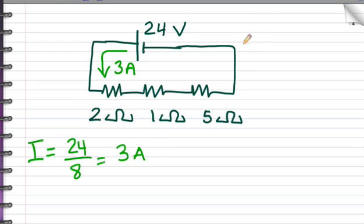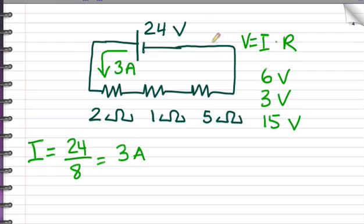Now to find the individual voltages, I will say voltage equals current times resistance. This one has a voltage of 3 times 2 or 6 volts. This one has a voltage of 3 times 1, 3 volts. And this one has a voltage of 3 times 5, 15 volts. 6 plus 3 plus 15 equals 24, the voltage of the battery.